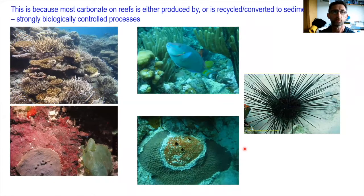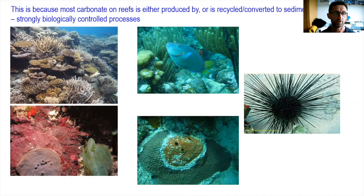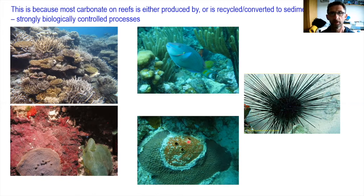Most carbonate on reefs derives from the production or conversion of carbonate produced by corals and other organisms into framework material, but also into sediment. We have a good understanding of where most of that comes from — either from corals or from calcareous red and green algae. We also know a lot about the processes that break down and denude this framework: the role of organisms such as parrotfish, urchins, and endolithic sponges. These processes are critical to reef building in terms of the framework but also the sediment supply.